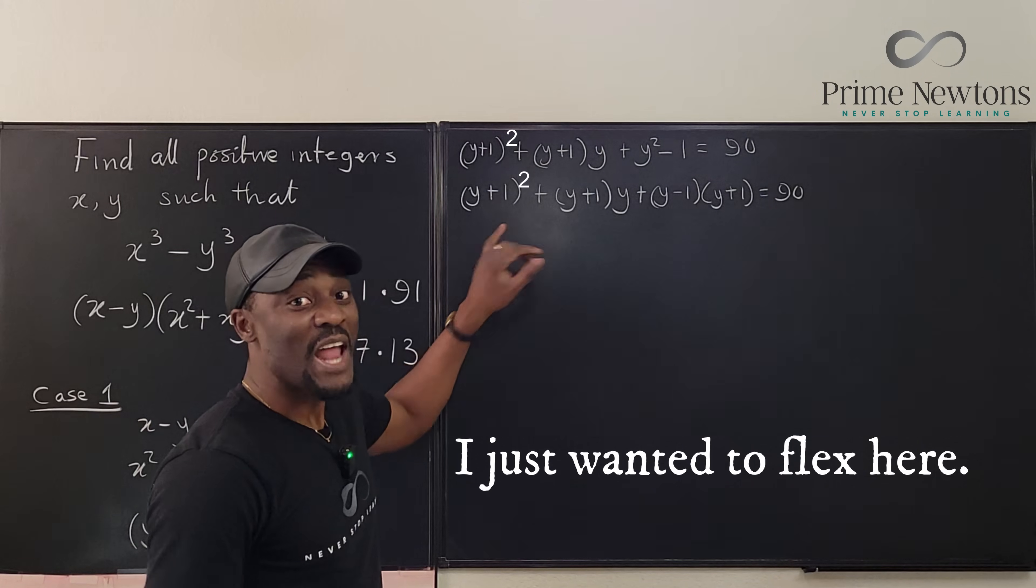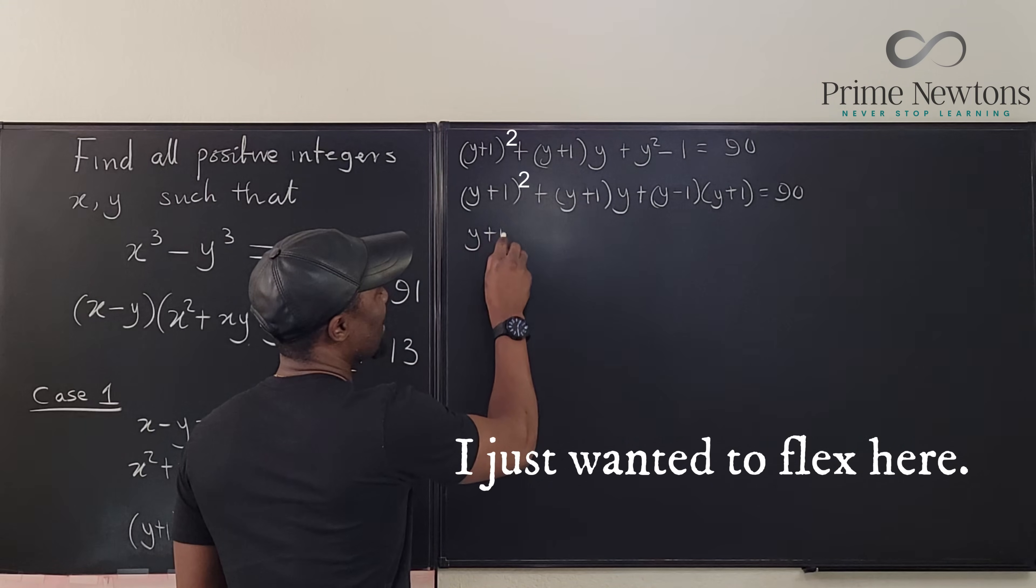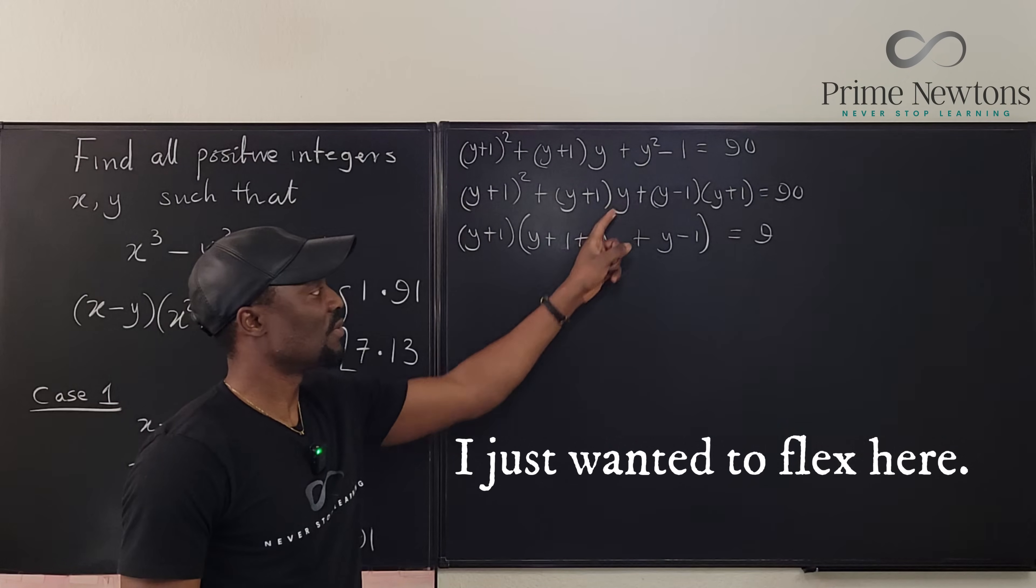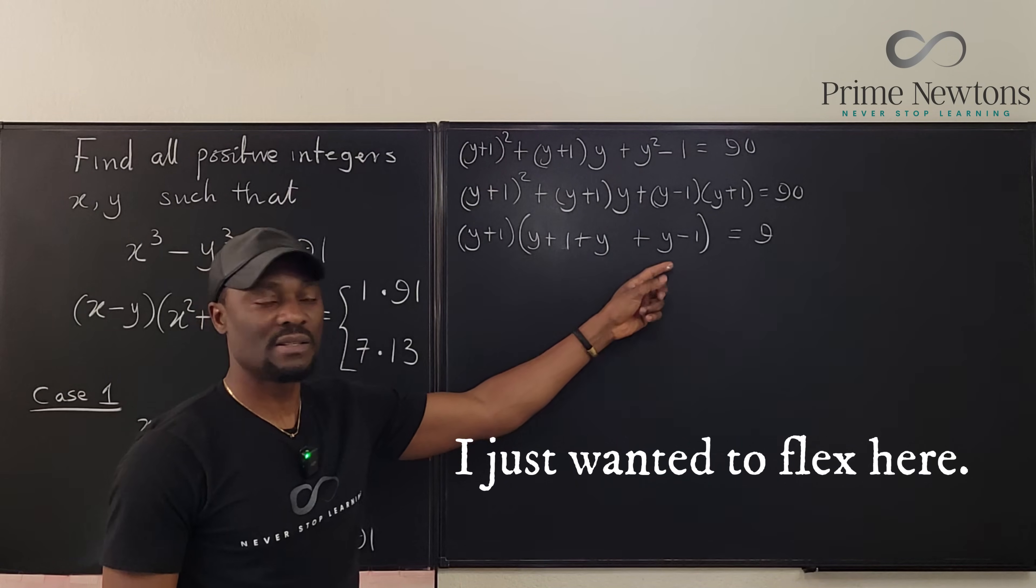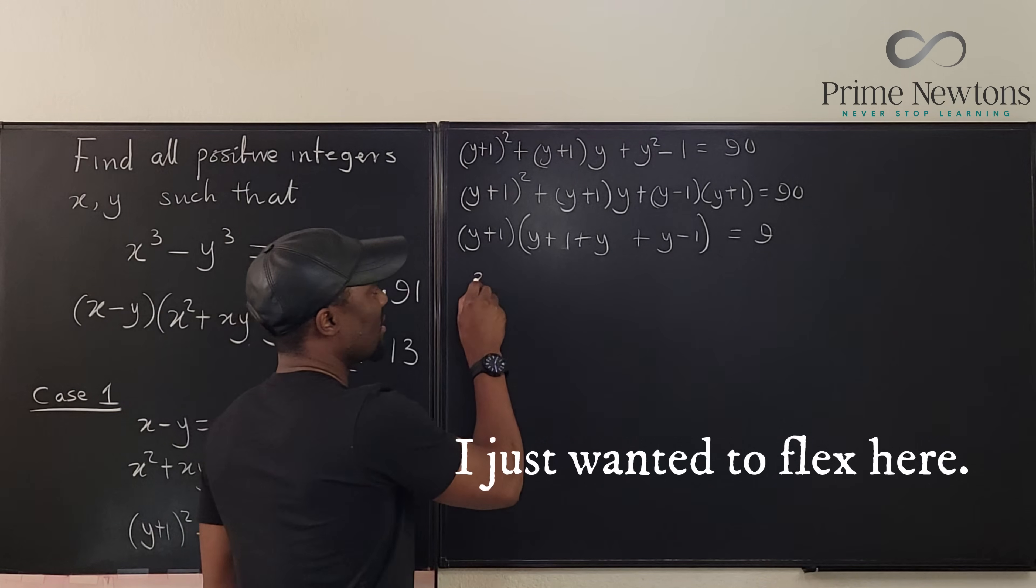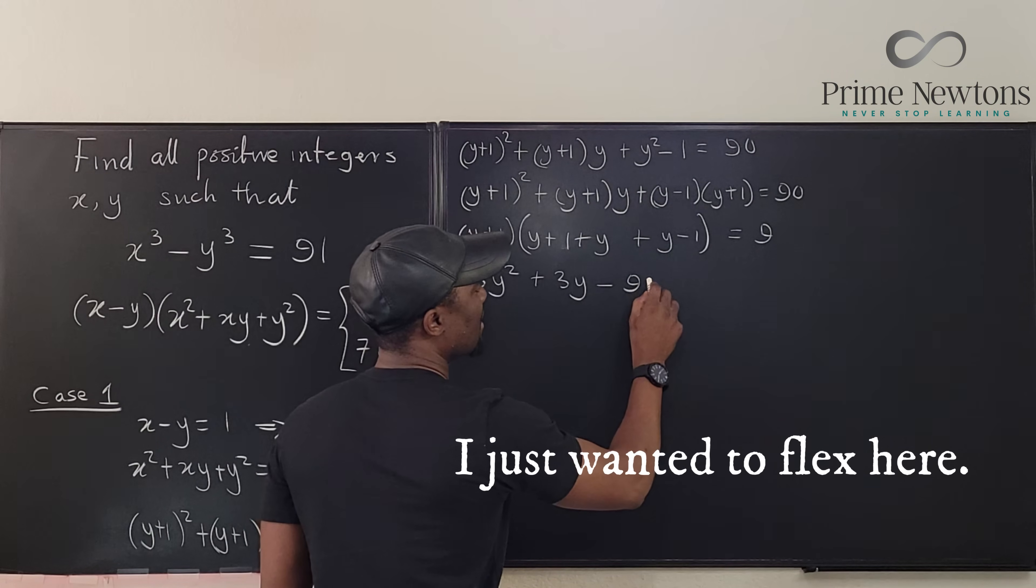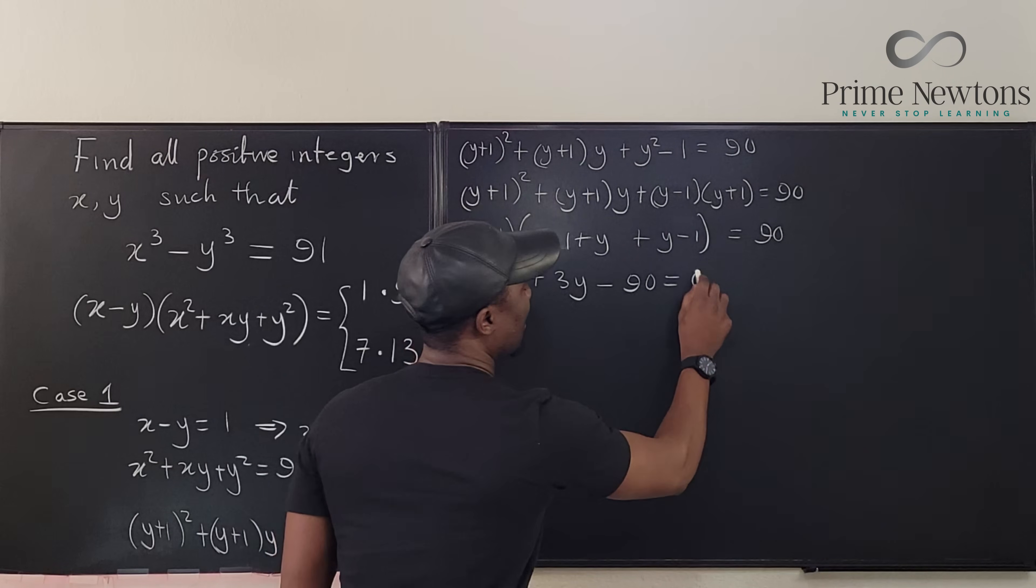Now I can factor out y plus 1 from all three terms. So I have y plus 1. And what is left inside? So if I take out y plus 1 from here, I have y plus 1, then plus y, then plus y minus 1. So this 1 minus 1, and then I have 3 y's inside. 3y times this is going to give me 3y squared plus 3y. If I bring this 9 here, it's minus 9. 90 equals 0.